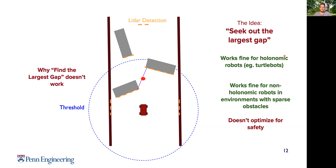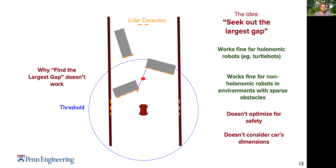This works for both holonomic and non-holonomic robots, but it doesn't optimize safety — meaning our gap approach does not prevent crashing against obstacles because it pursues the gap without considering the car's dimensions. We don't know the width or length of the car, so we would crash. It's also hard to decide the threshold T: what distance should we approach? If we have smaller or bigger gaps, we cannot change that dynamically — we have to decide beforehand. Therefore we are searching for a better idea.